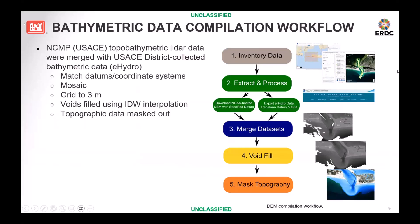One of the workflows the team has been working on is the compilation of bathymetric data from different sources. We take National Coastal Mapping Program topo-bathymetry lidar data and merge it with USACE district-collected bathymetric data sourced from eHydro. The workflow is: inventory and download data in the area of interest, extract and match datums and coordinate systems as necessary, mosaic those datasets together, grid them to three meters, fill any remaining voids with inverse distance weighted interpolation, and then mask out topographic data. This workflow is applied first before any of the others.